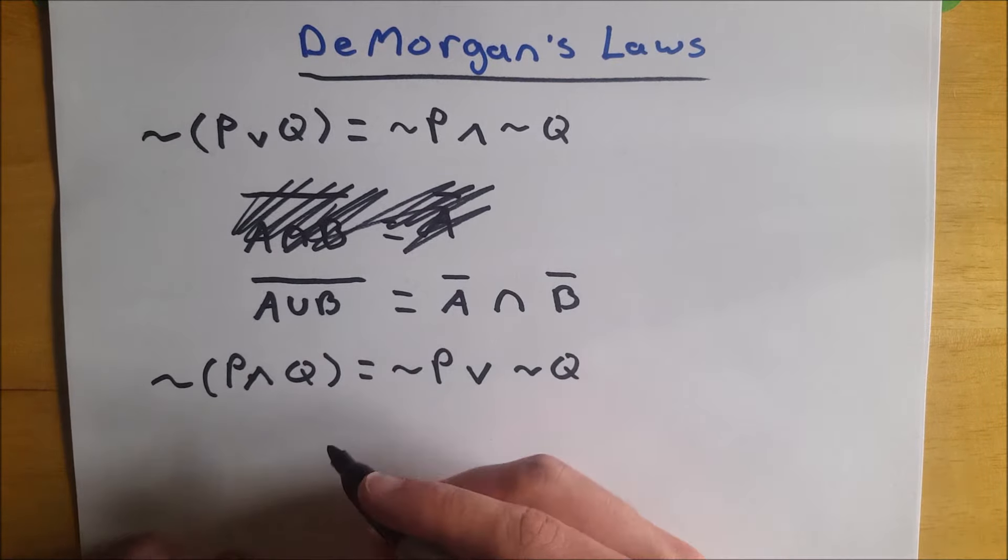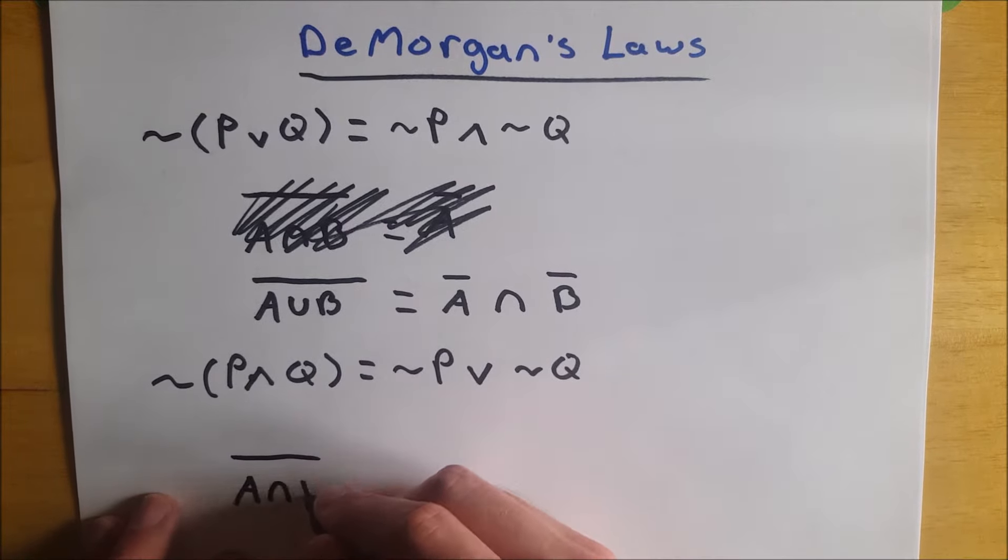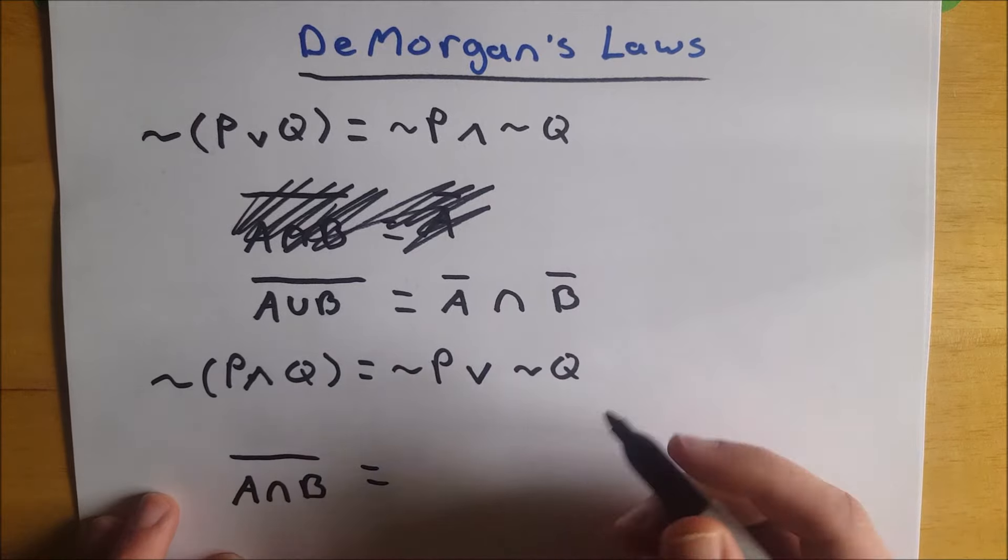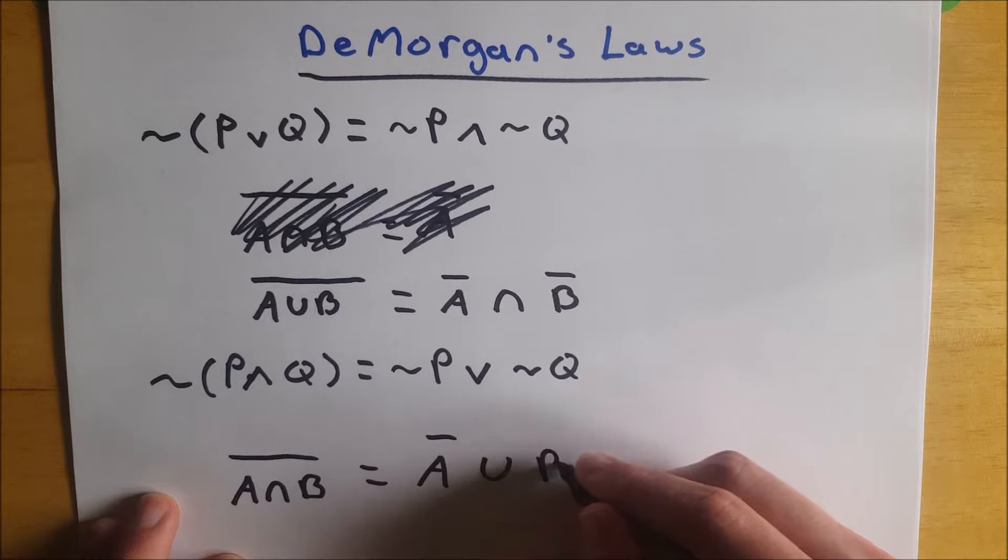Now in set notation, we could write this as the complement, that's not A and B, which is A intersect B, and that will become, you could probably predict by now, the complement of A union with the complement of B.